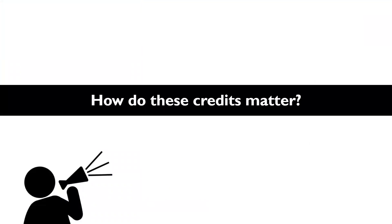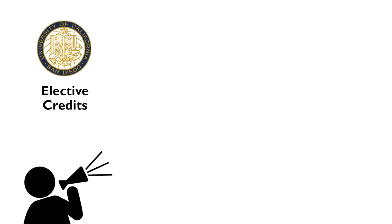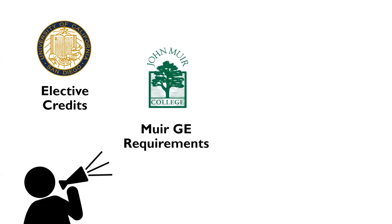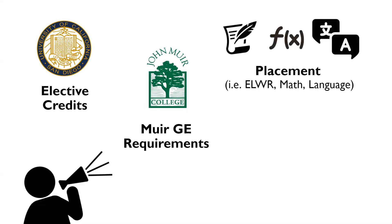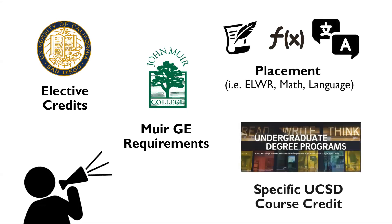How do these credits matter? Credits obtained from these exams might be applicable toward elective units — every student needs a minimum amount of overall units to graduate for university requirements — Muir General Education requirements, placement, or a specific UCSD course.